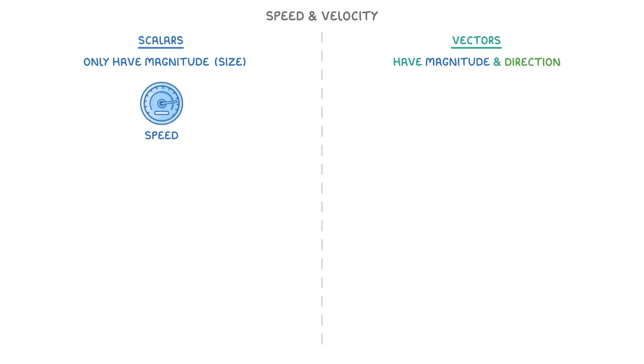So speed would be considered a scalar quantity, because it only conveys magnitude. This might be a person running at 4m per second, or a plane flying at 250m per second.